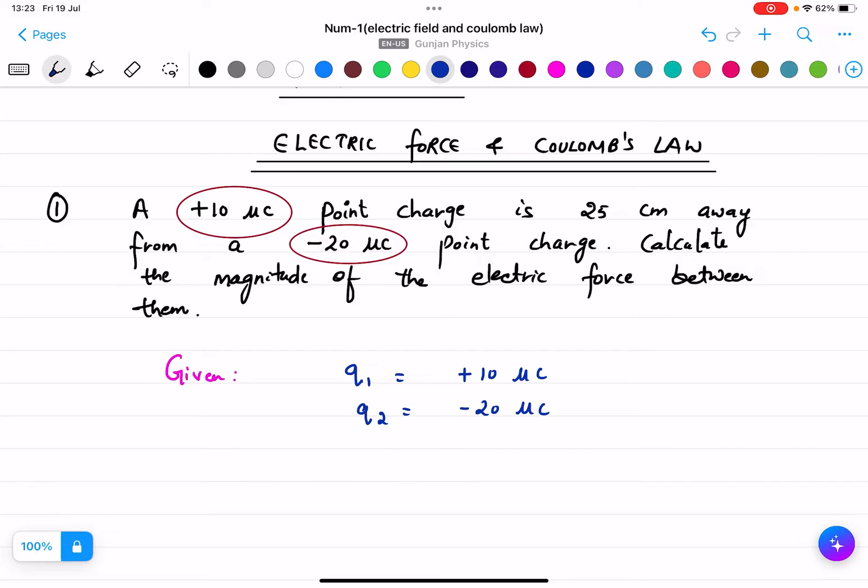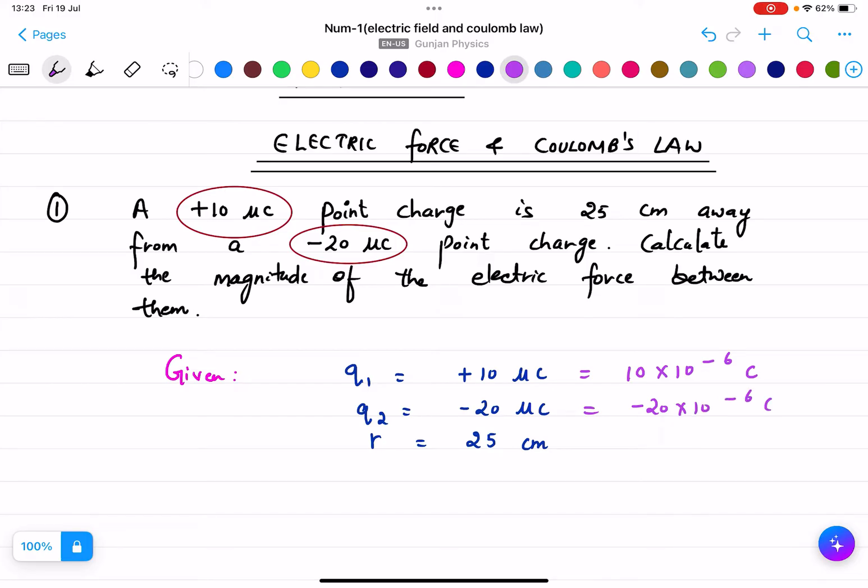And we can see r is given as 25 centimeters. We need to first change the units. That means it will be 10 × 10⁻⁶ coulombs, -20 × 10⁻⁶ coulombs, and 25 × 10⁻² meters. R must be in meters, not centimeters.